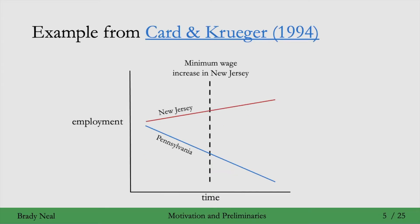Here's a popular example from the Card and Krueger 1994 paper. They wanted to study the causal effect of increasing minimum wage on employment. The treatment group here was New Jersey, which was going to have a new minimum wage law go into effect at a specific point in time marked by the dotted line. The control group was the neighboring state, Pennsylvania, who wasn't going to have any minimum wage increase. We see that employment in Pennsylvania is just going down over time, and in the treatment group we see a different trend. We're going to use these differences in trends to get our causal effect estimate.